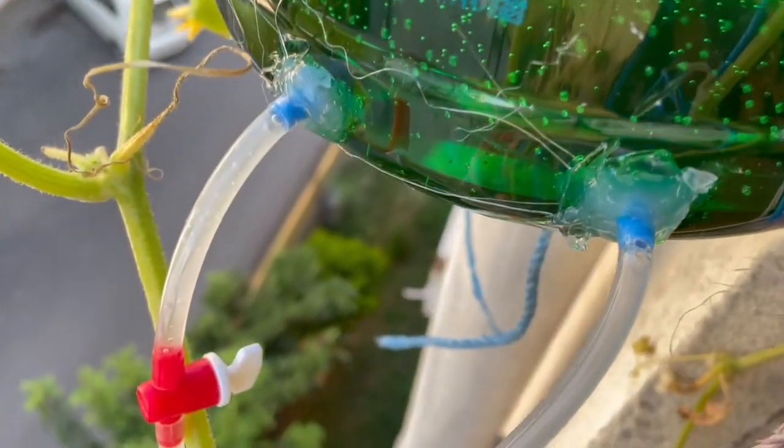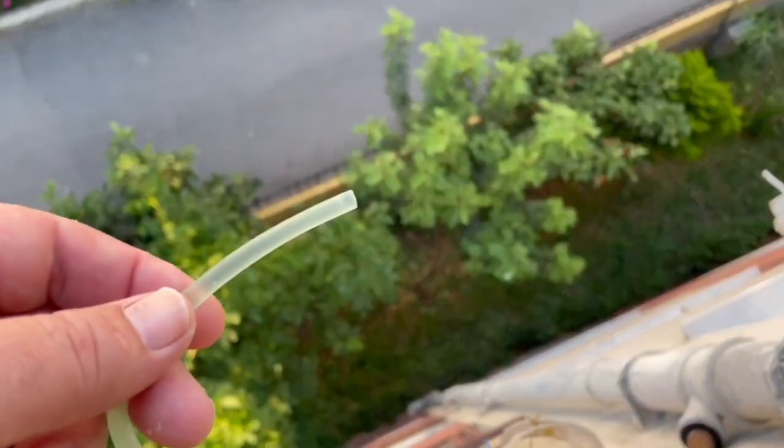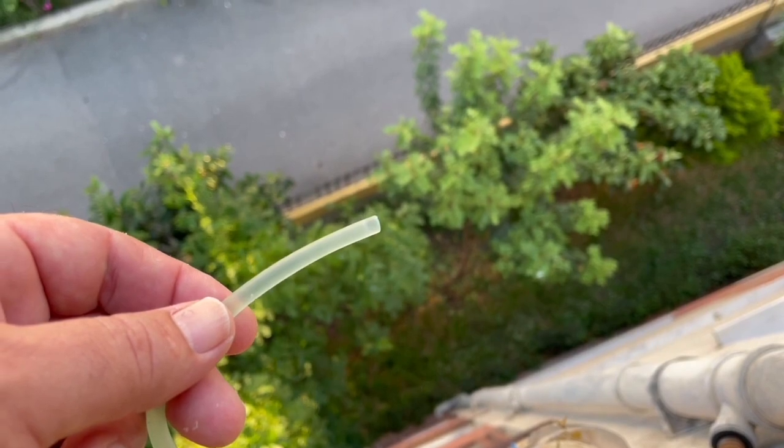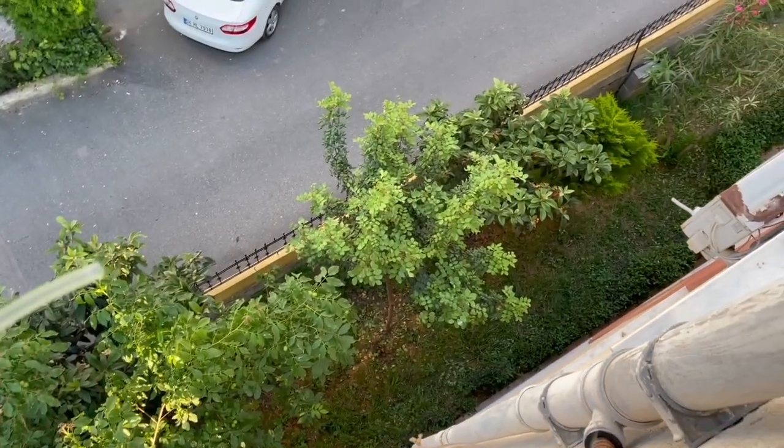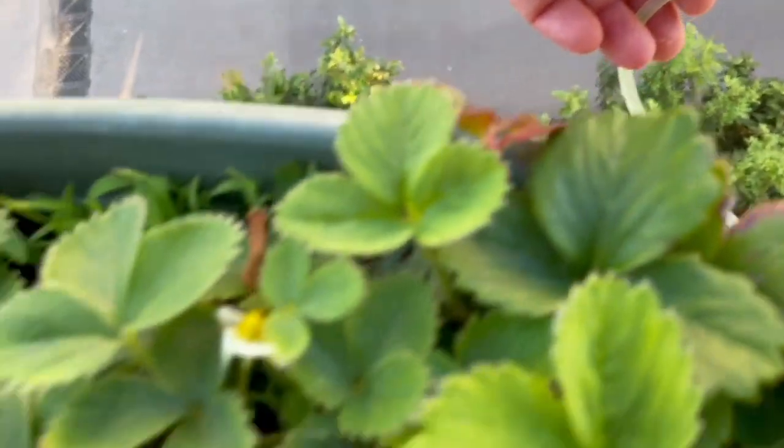In a moment, we will do this process with a 5 litre pet bottle sold in grocery stores. This time, we will fix the hose directly without using the tee unit. Now, let's learn about the construction of other simpler systems.